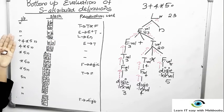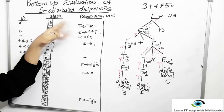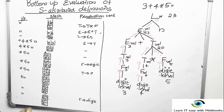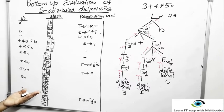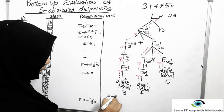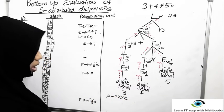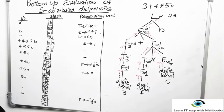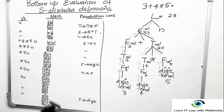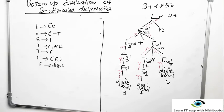Whenever you are reducing XYZ into A, the top should be decremented accordingly. That is all about the bottom-up evaluation of S-attributed definitions using a stack.